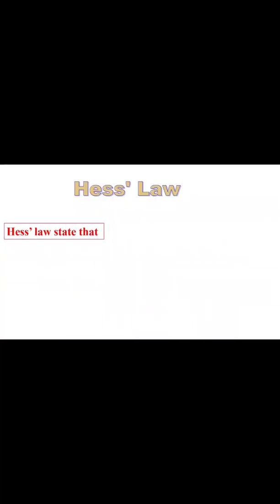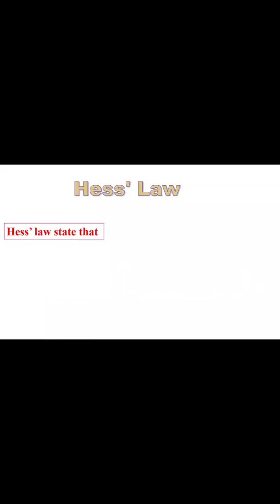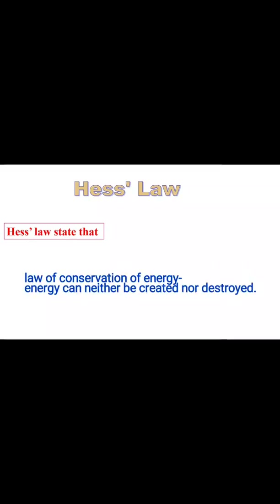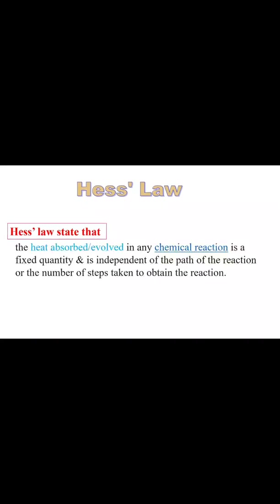Hess's Law is a relationship in physical chemistry named after Germain Hess. It is derived directly from the law of conservation of energy. Hess's Law states that the total enthalpy change in any chemical reaction is a fixed quantity and is independent of the path of the reaction or the number of steps taken to obtain the reaction.